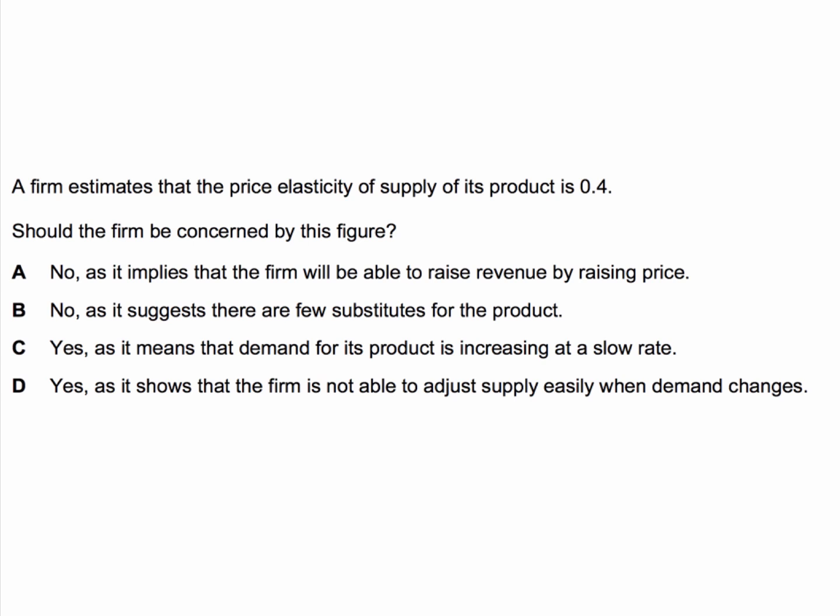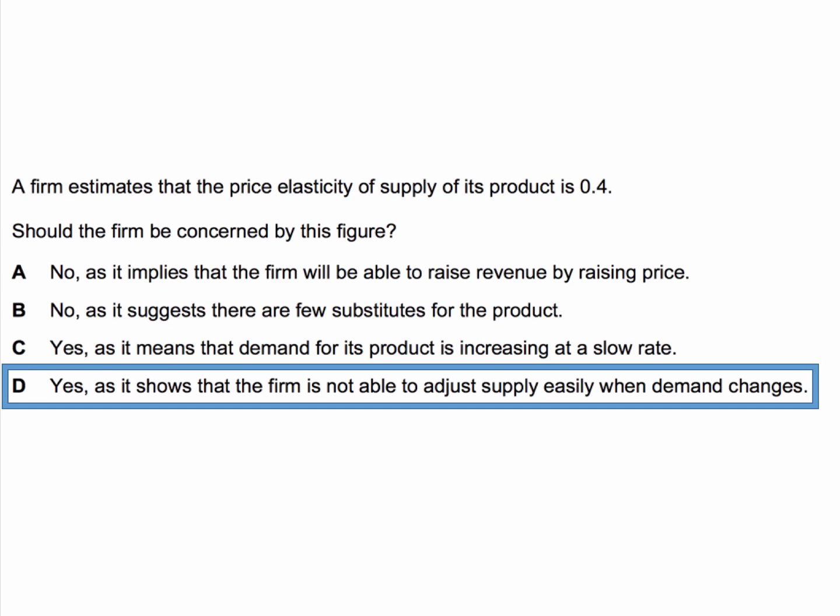We are back with the correct answer and the explanation along with a bit of revision. We are told that the elasticity of supply for the product is 0.4. Should the firm be concerned? The correct answer is D — the firm should be concerned as it shows the firm is not able to adjust supply easily when demand changes.